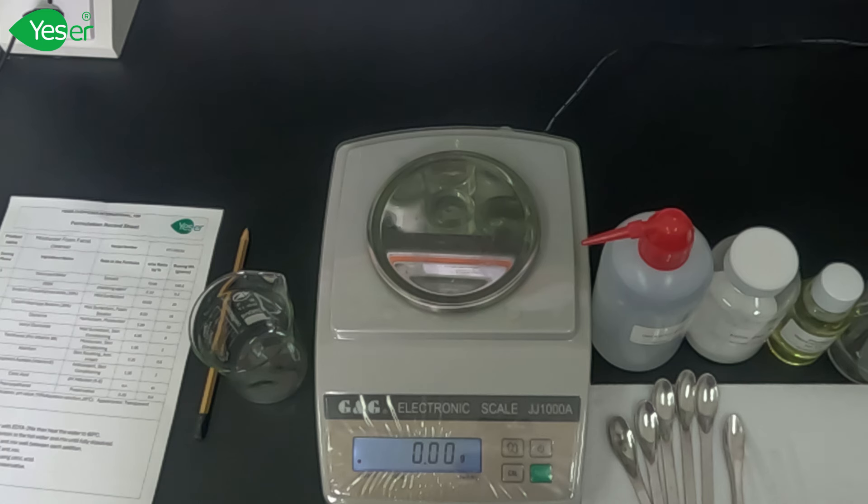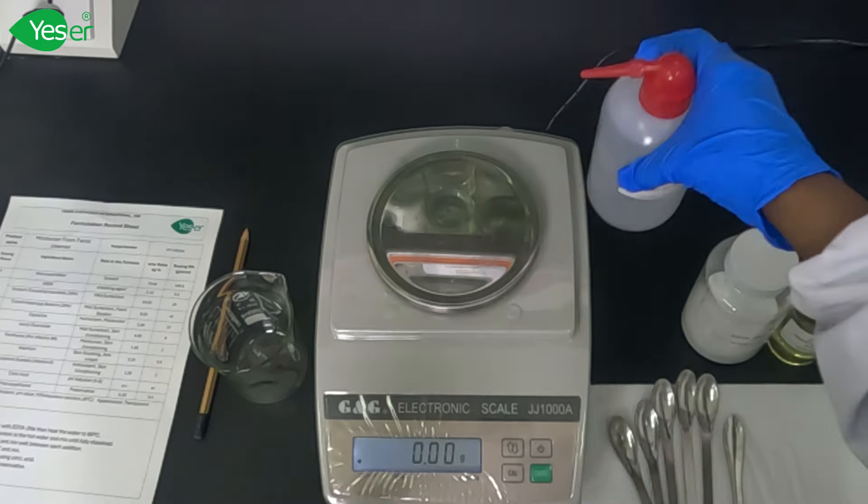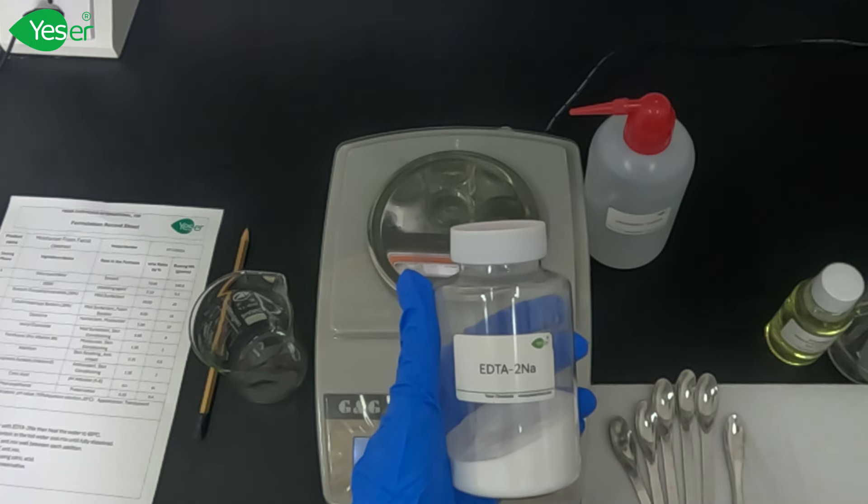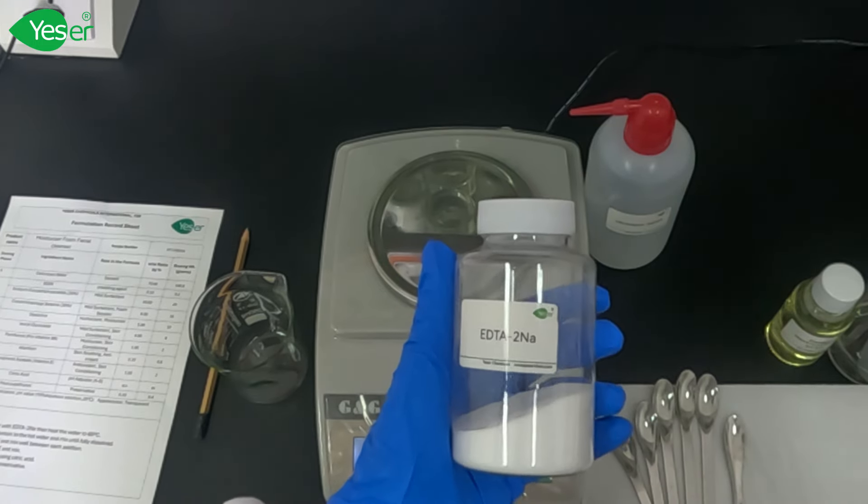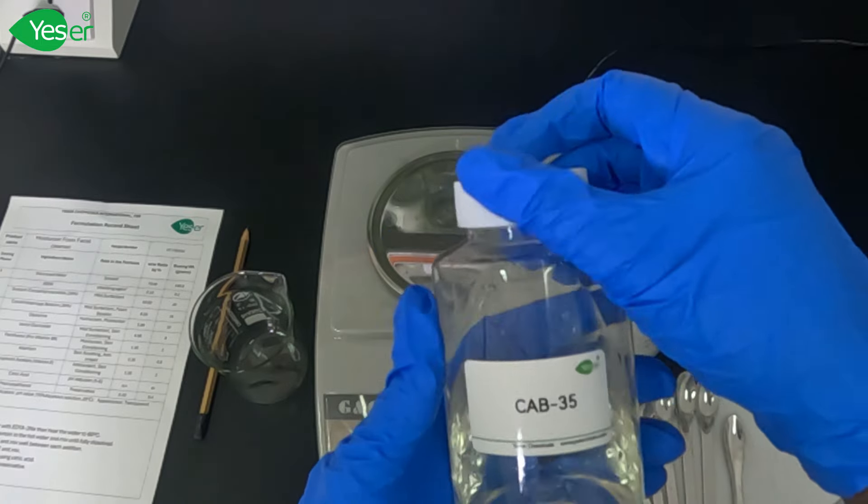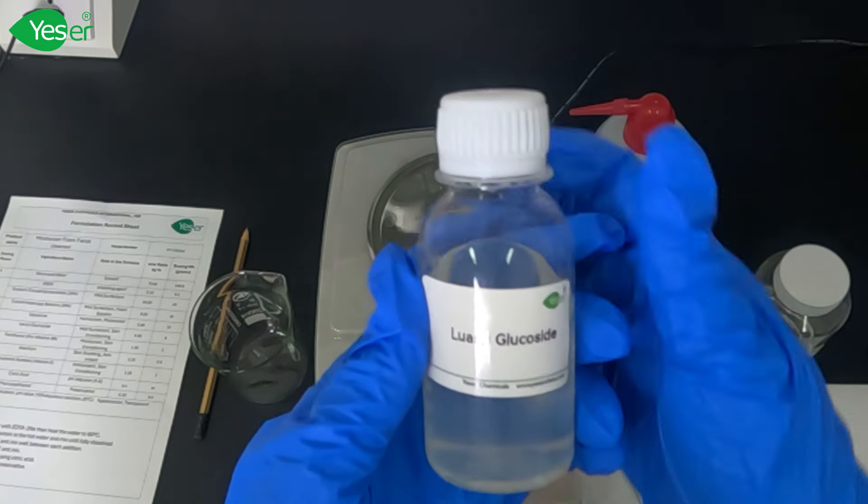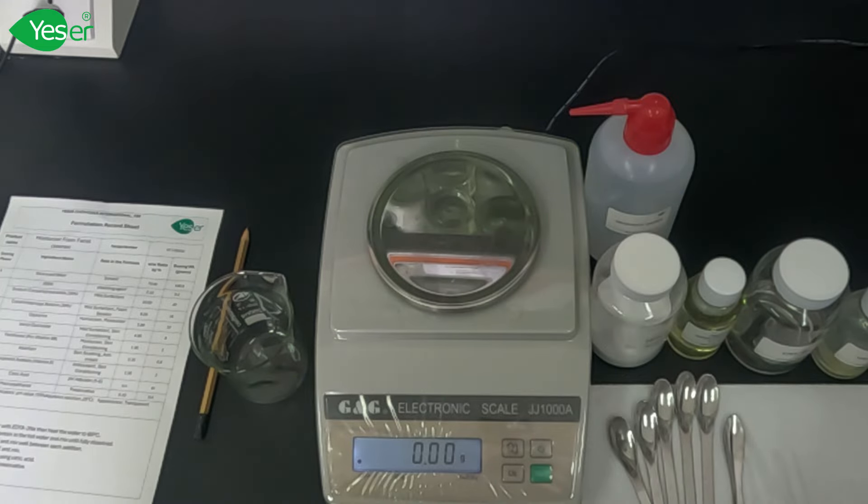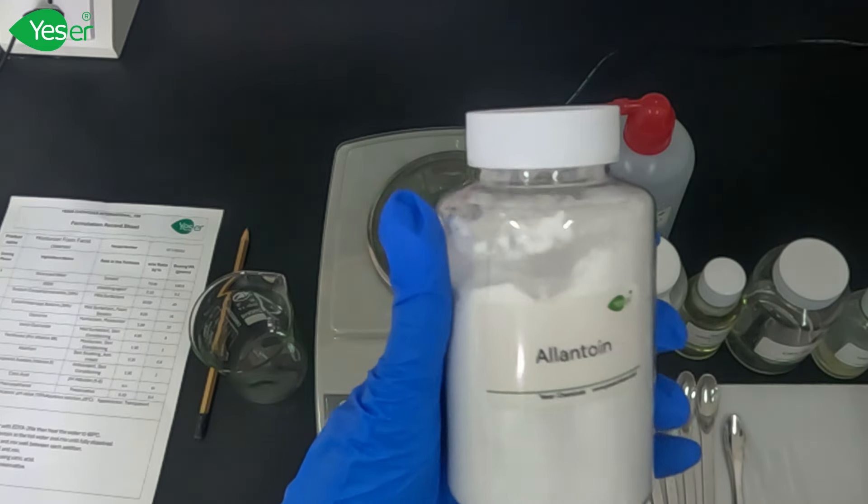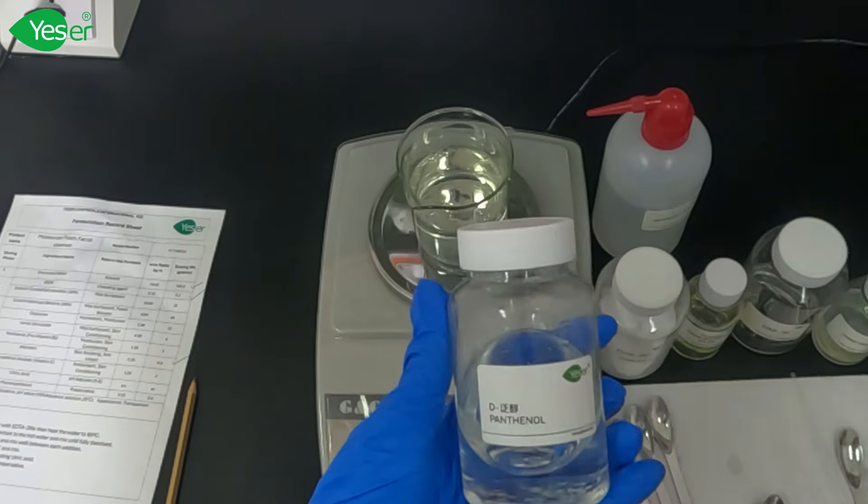We're going to start by introducing our chemicals that we will need today. First, we're formulating a moisturizer foam facial cleanser. We'll start with the base which is deionized water, then our chelating agent which is EDTA disodium. Next, our first surfactant from Extrachemicals is SCA 30%, our secondary surfactant is CAB 35%, and our last surfactant today is lauryl glucoside. For moisturizer agents, we have allantoin, glycerin, and our third moisturizer is B5 or panthenol. For preservative today, we have phenoxyethanol PE.